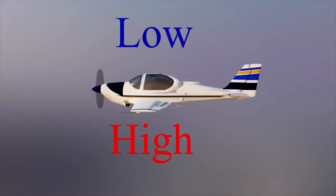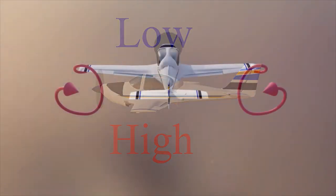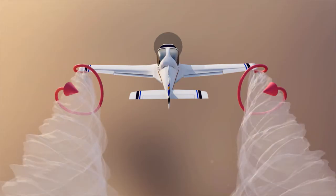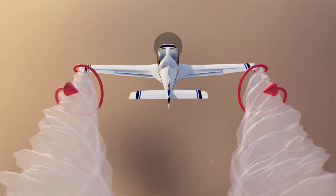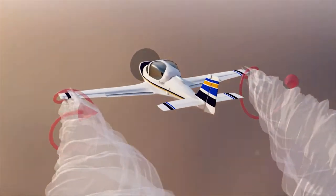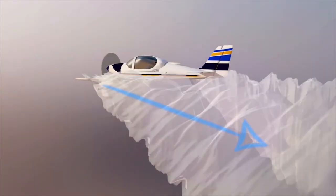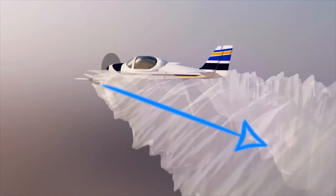We've seen in a previous video that the pressure difference between the top and bottom of the wing causes airflow around the wing tips. This creates a rotating flow called wing tip vortices. We've also seen that wing tip vortices cause downwash, which is a necessary result of producing lift.